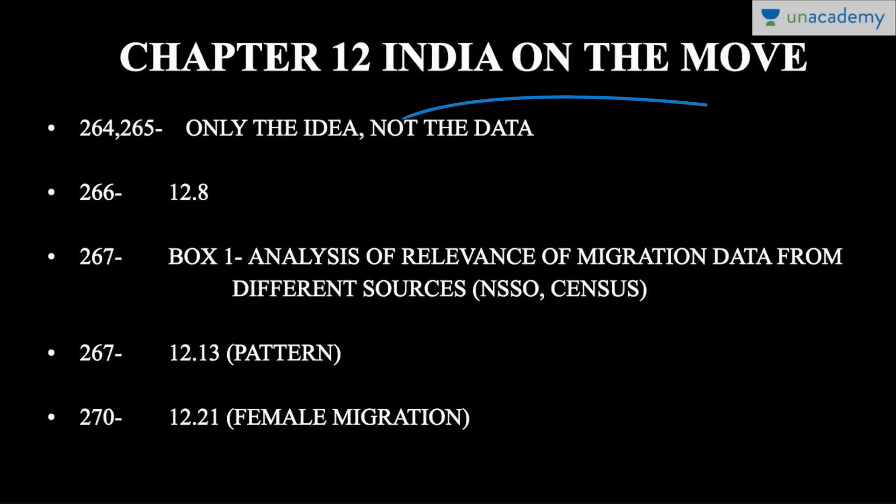Chapter twelve is 'India on the Move.' It is included because the ideas are very important to grasp, but there is no need to go into detailed facts. It starts with a quote by B.R. Ambedkar: 'An ideal society should be mobile and full of channels for conveying a change taking place in one part to the other.' The chapter talks about immigration issues, railway passenger data analysis, and India's linguistic cleavage. Start with pages 264 and 265 — focus on the idea, not the data.